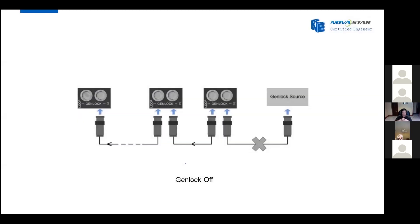The first precondition is about gen-lock. We need to disable gen-lock. When gen-lock is enabled, the sending card needs to wait for the VS signal from the gen-lock generator, which takes some time. That means the sending card cannot do image processing and sending in real time, which makes low latency impossible.